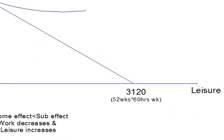What would happen if somebody asked you about the income and substitution effects of a higher tax? In this diagram, we'll use an income-leisure diagram. This line is your budget constraint, and here's your indifference curve. I'm going to assume 52 weeks a year, with a maximum of 60 hours a week — so if you don't work, you can have a maximum of 3,120 hours per year in leisure time.